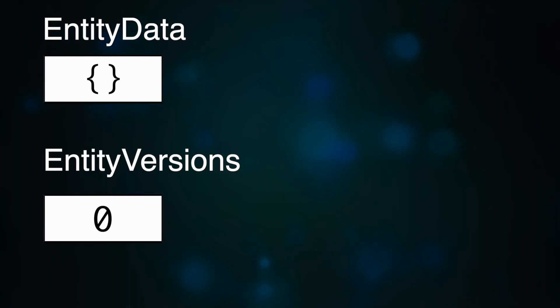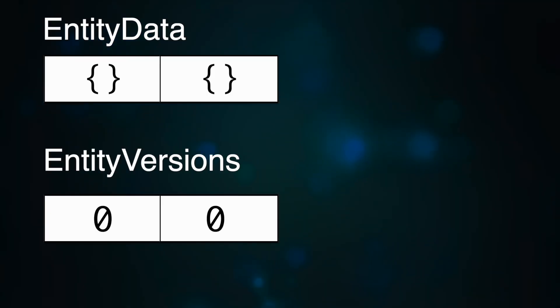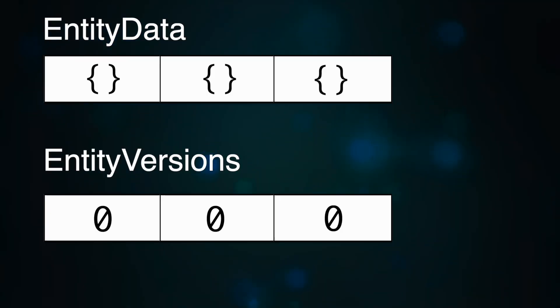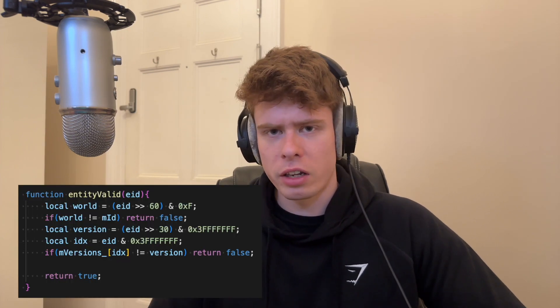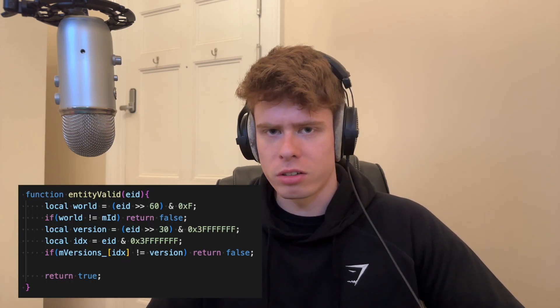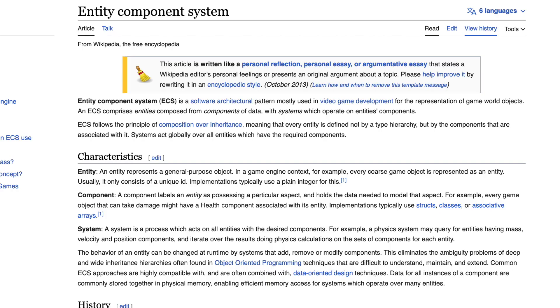So for instance, when you go to create an entity, the lists get updated. If you were then to destroy one of those entities, the version in the list would get bumped. So what this means is that if anywhere else in the code you still hold a reference to that entity, you can just check if it's valid extremely easily. With that system, I now had my 64-bit entity handles in place.